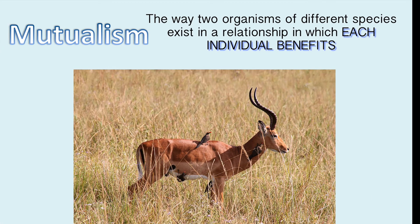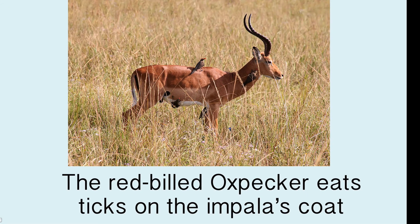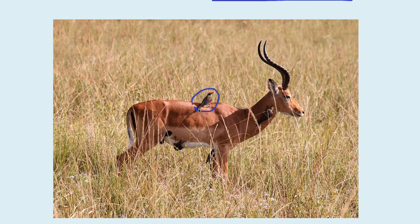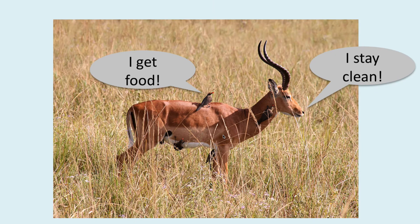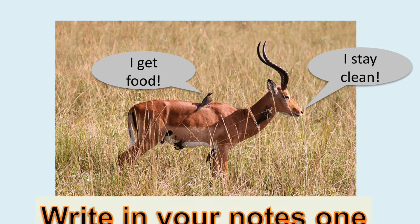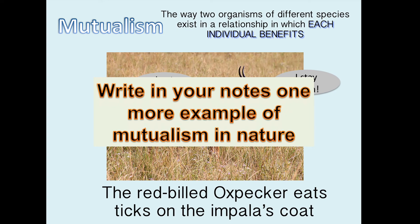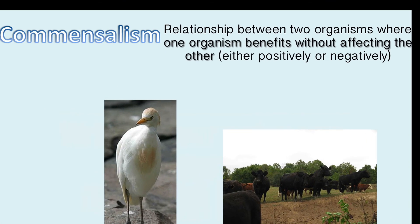Mutualism is when two organisms of different species interact and each individual benefits — a mutual benefit. A good example is the red-billed oxpecker, which eats ticks on the impala's coat. The bird gets food and the animal stays clean — they both benefit. That's a mutualistic relationship. In your notes, come up with one more example of mutualism in nature; you can look that up.